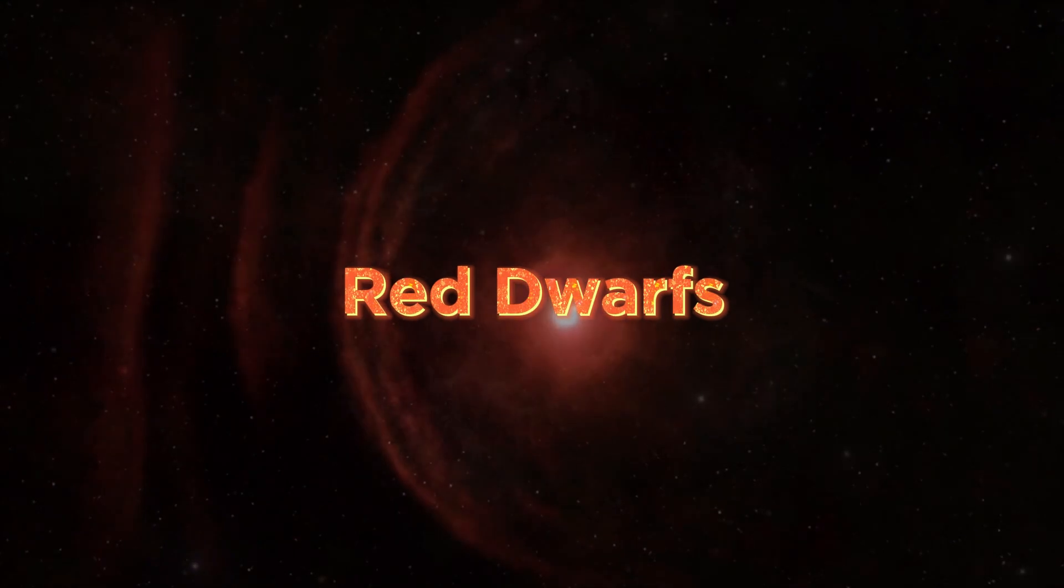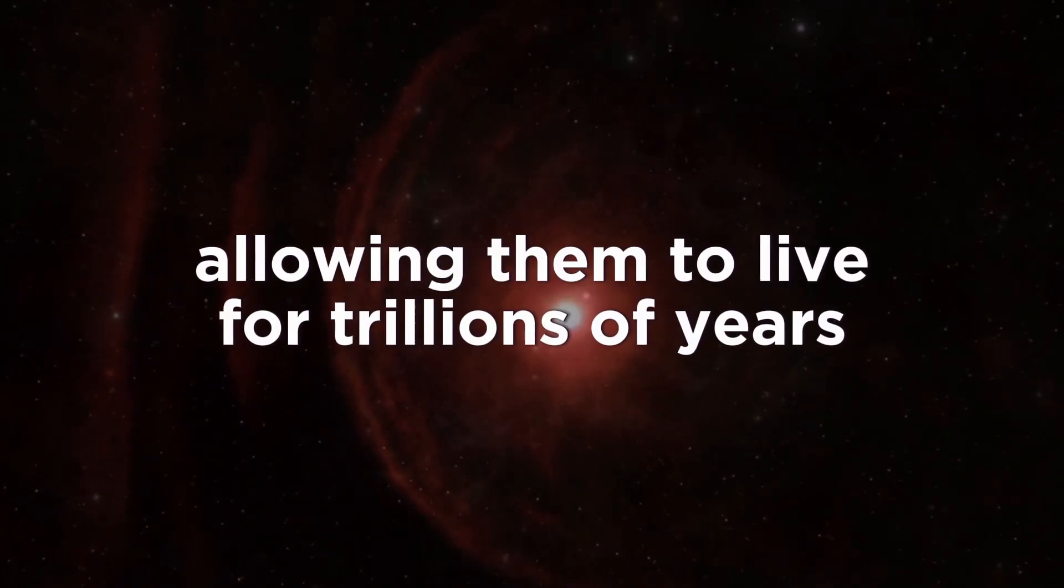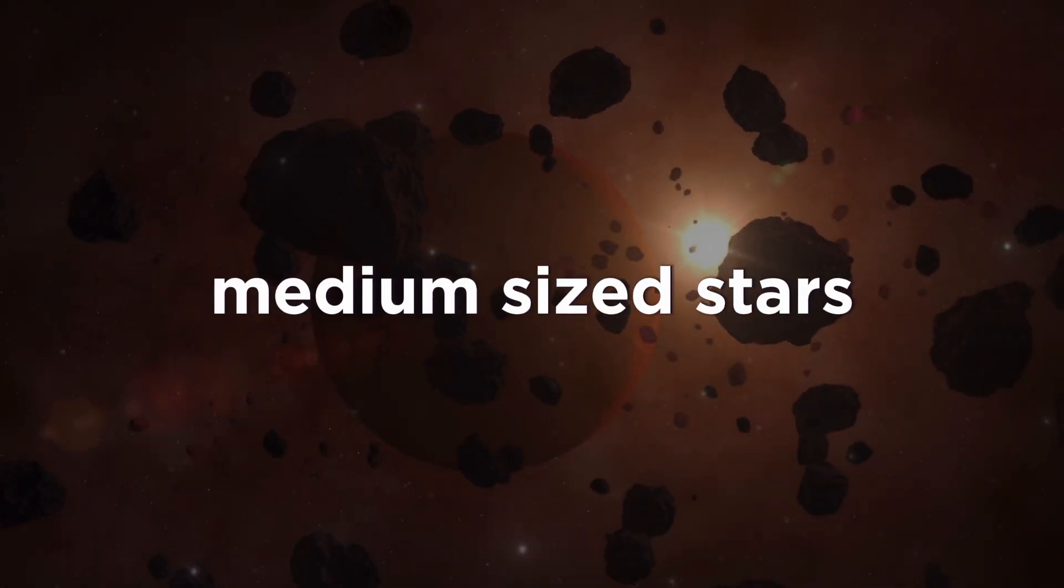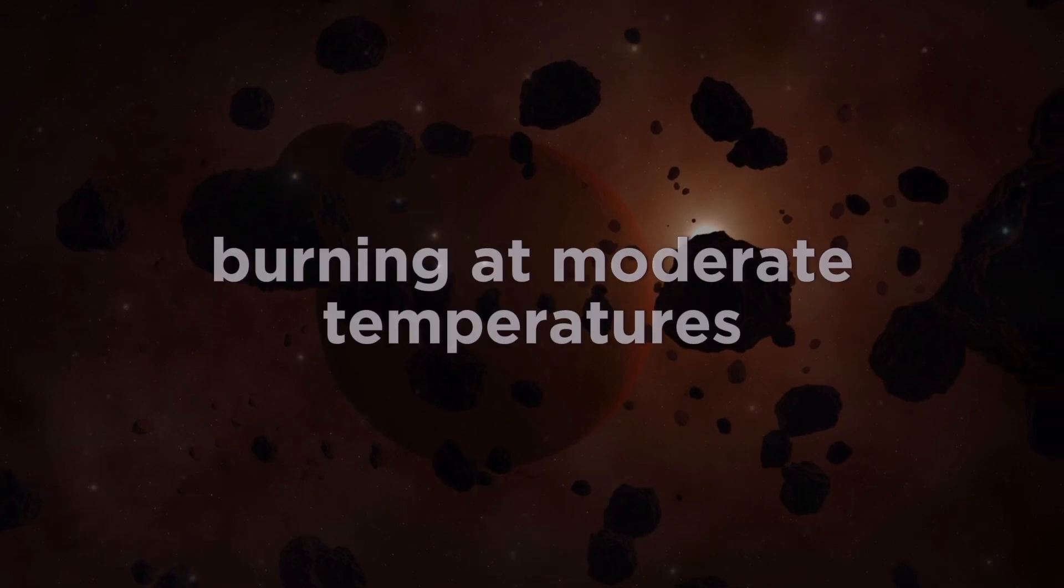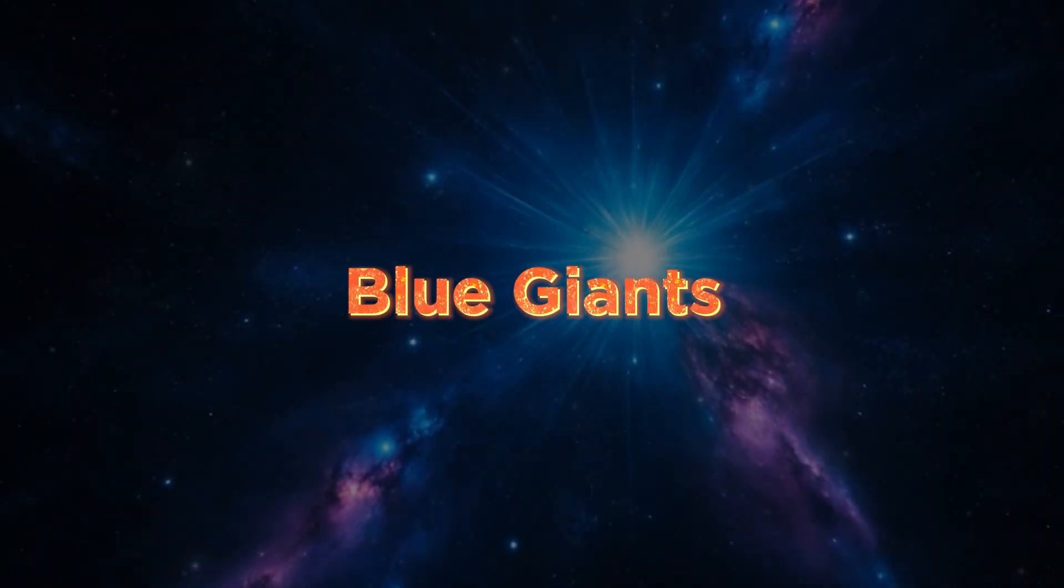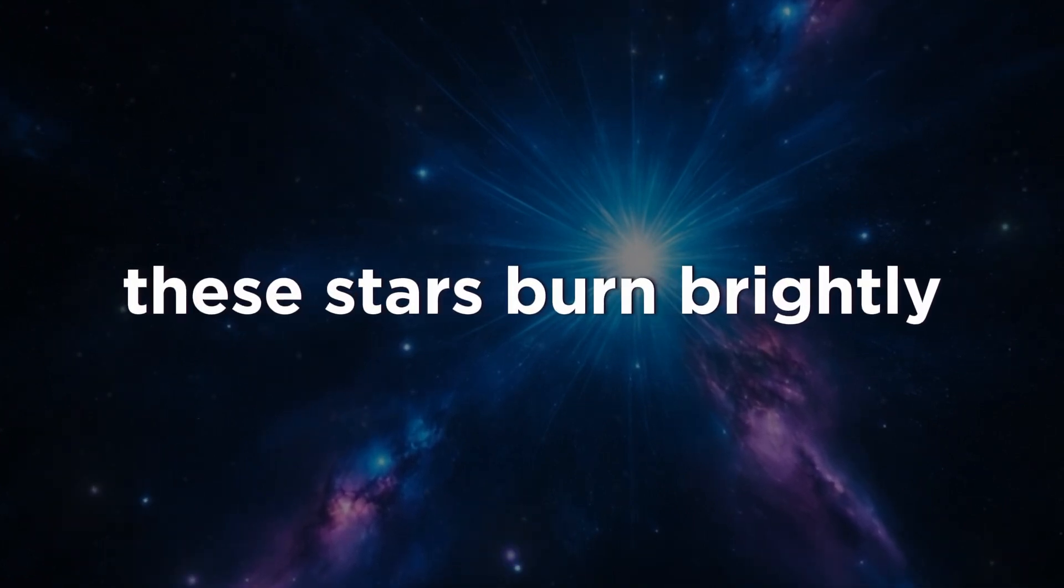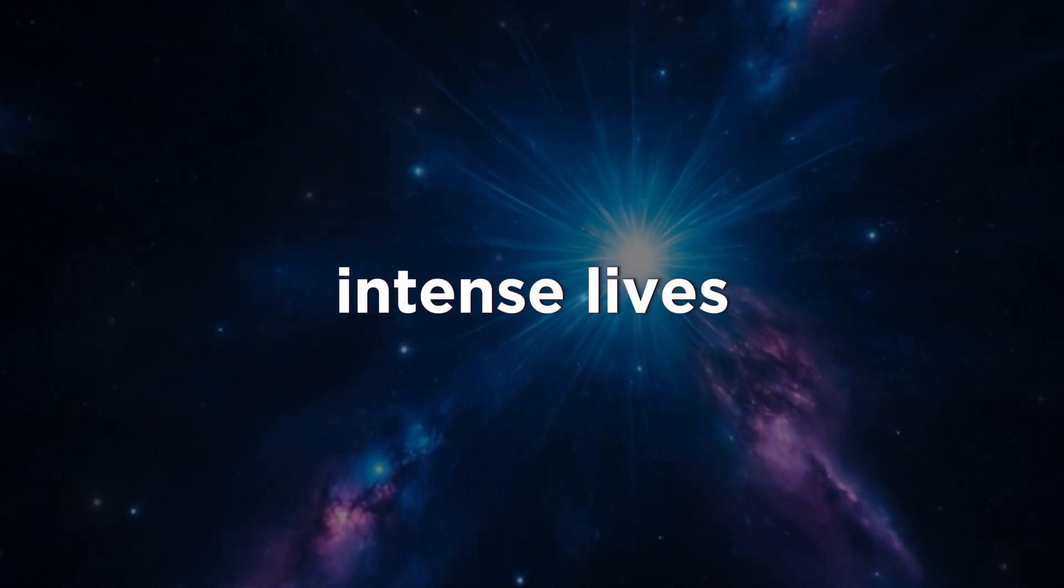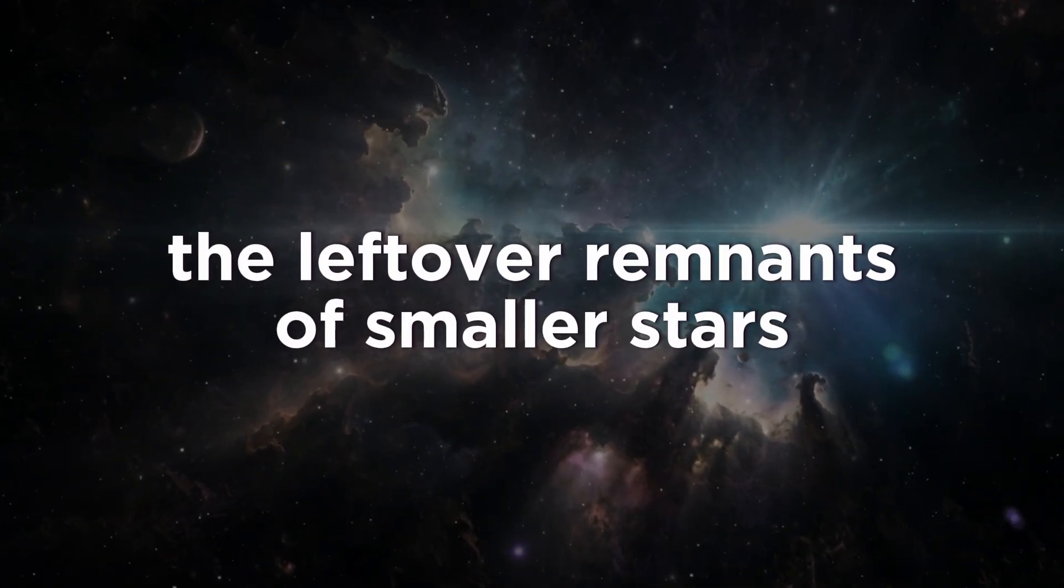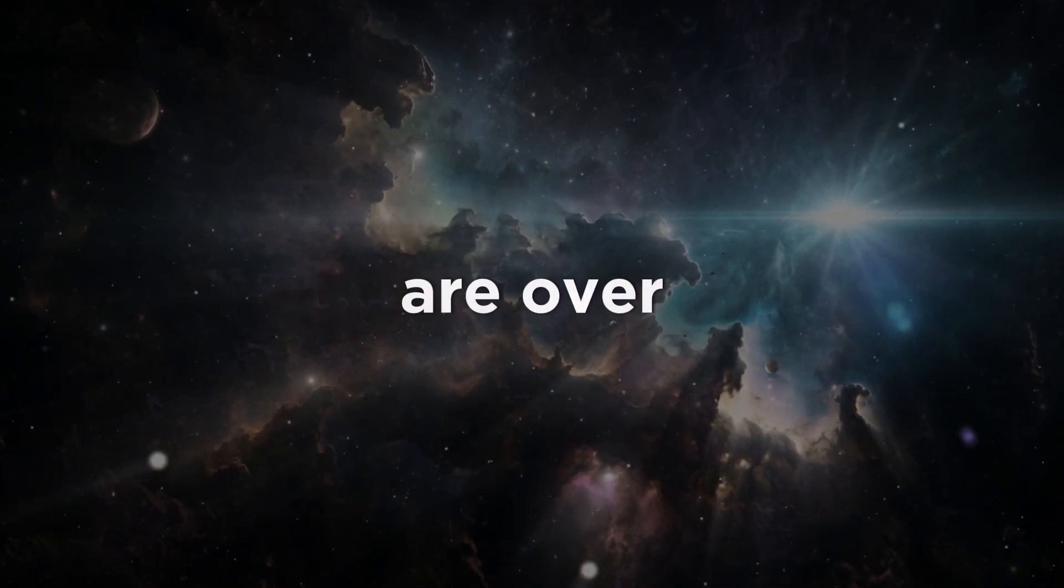Red dwarfs: Small, cool stars that burn their fuel very slowly, allowing them to live for trillions of years. Yellow dwarfs: Medium-sized stars, like our sun, burning at moderate temperatures and living for billions of years. Blue giants: Massive and extremely hot. These stars burn brightly, but live short, intense lives. White dwarfs: The leftover remnants of smaller stars. These dense objects continue to glow after their main life stages are over.